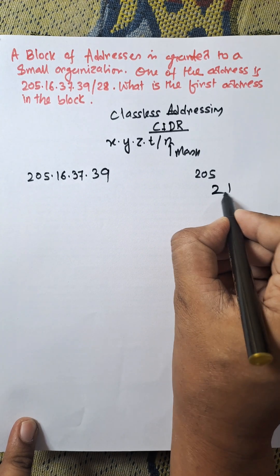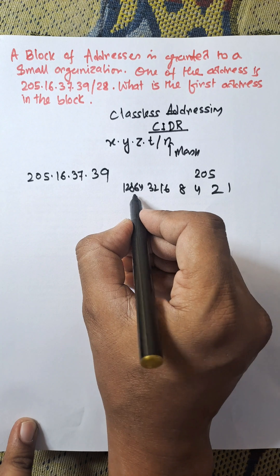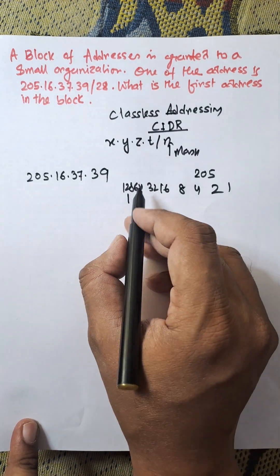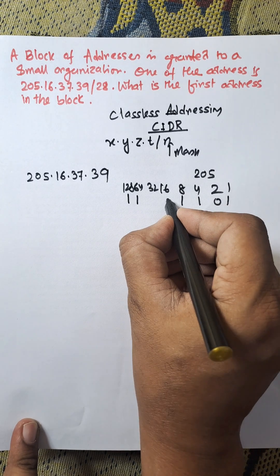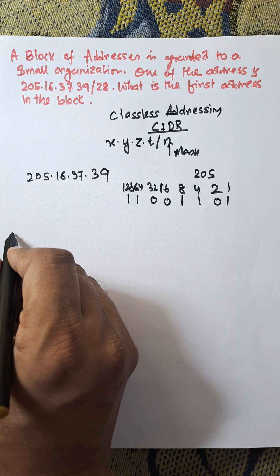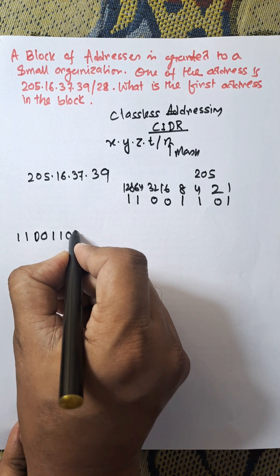1, 2, 4, 8, 16, 32, 64, 128. We need to choose 128, 64, 8, 4, and 1. That means 192, 8, and 5. So this is the binary equivalent of 205: 11001101.